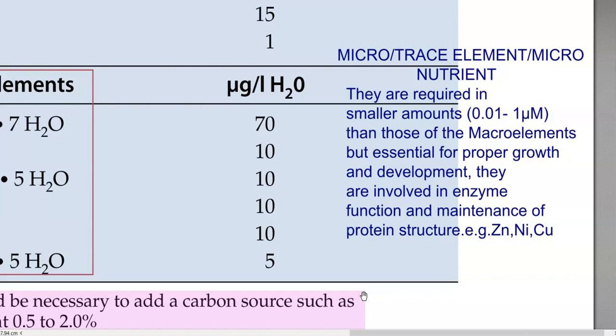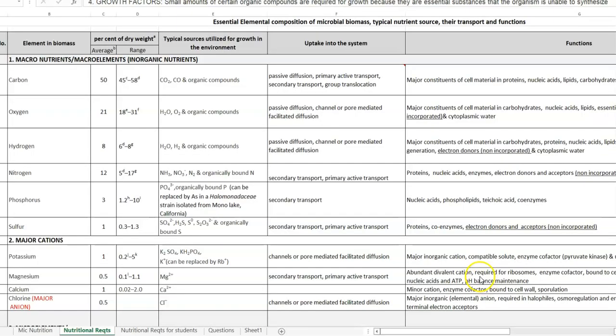Microelements play an important role in enzyme function as well as maintenance of protein structure in cells. Examples of microelements include zinc, nickel, and copper. For example, zinc participates in all five classes of enzymes involved in metabolism.